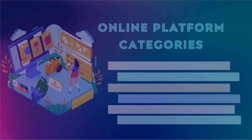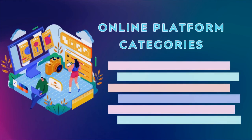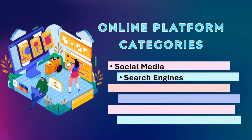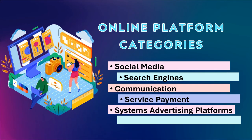So those are the categories of online platforms, which include social media, search engines, communication, service payments, systems advertising platforms, and creative content outlets.